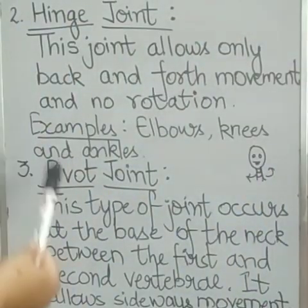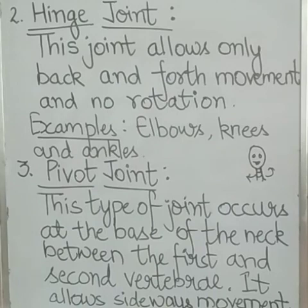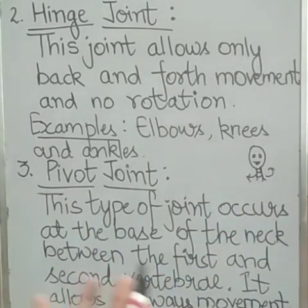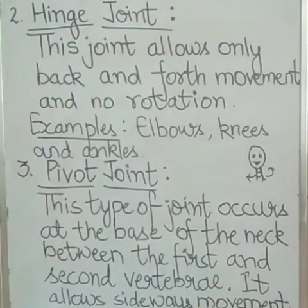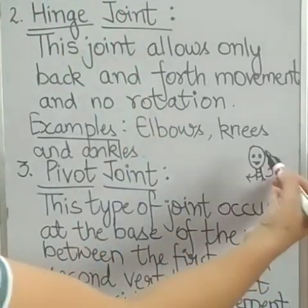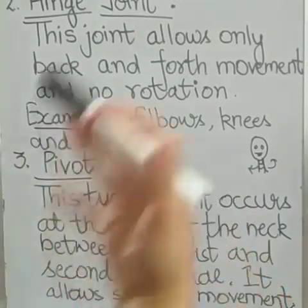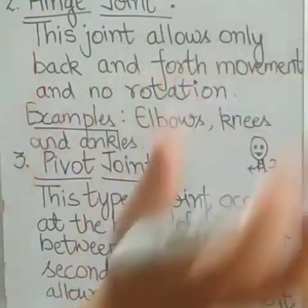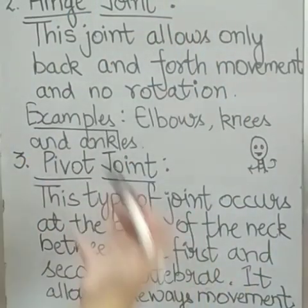Then comes pivot joint. This type of joint occurs at the base of the neck, between the first and second vertebrae. Vertebrae are the bones present in the vertebral column, which is your backbone. It allows a sideways movement — because of this joint, we can move our head to the left, right, up, and down. This is known as pivot joint.